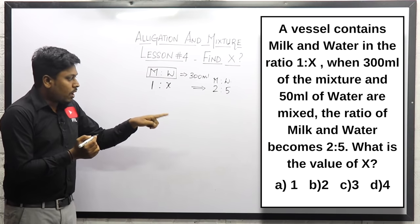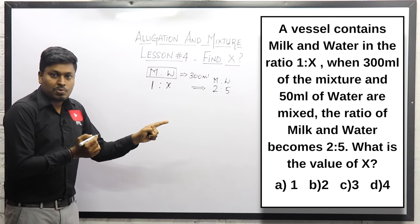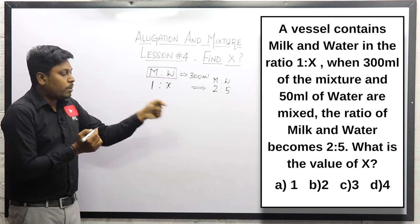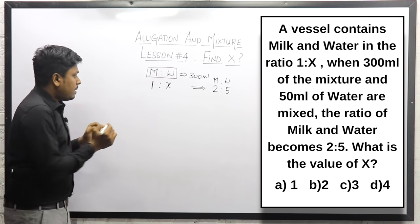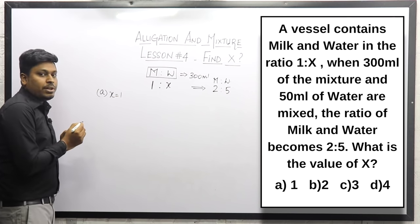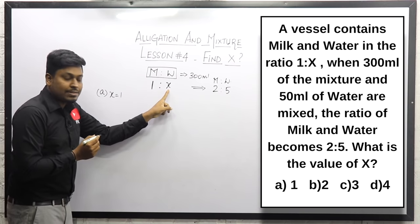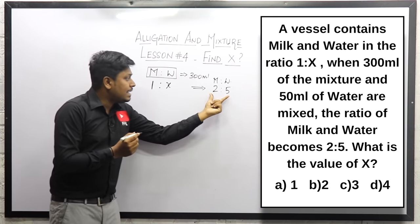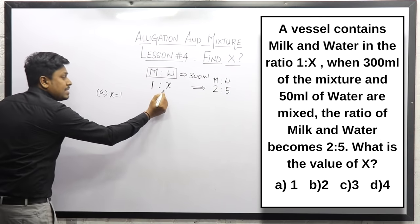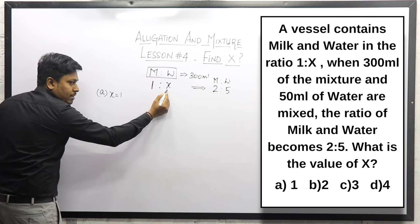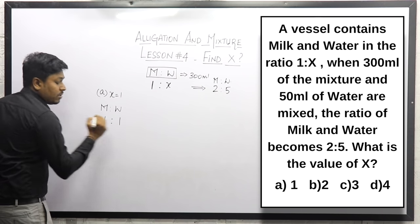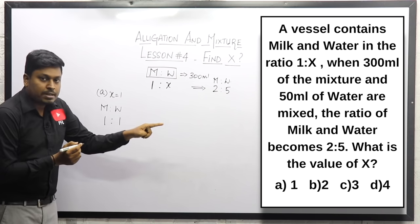The options are: option A — x is equal to 1; option B — x is equal to 2; option C — x is equal to 3; option D — x is equal to 4. I will take option A first, assuming the value of x is equal to 1, and substitute it to check whether we get the ratio 2 is to 5. If x equals 1, then milk and water ratio becomes 1 is to 1.